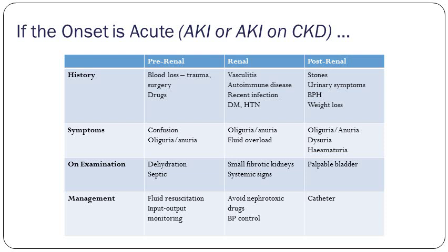If there are no signs of shock or acute fluid loss, consider renal causes — less common in causing acute kidney injury. Ask about vasculitis, autoimmune diseases, diabetes or hypertension. The patient will be oliguric, complaining of fluid overload symptoms — heart failure symptoms. On examination: systemic signs of vasculitis or autoimmune disease. Management: avoid nephrotoxic drugs, look at the drug chart, and make sure blood pressure is within range.